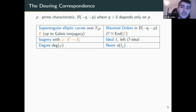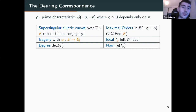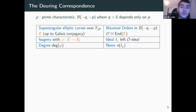This is a two-way street, so the converse is also true: for each maximal order I have a corresponding curve. So this is for the nodes of my graph. Then I can do the same for the edges, which are isogenies and ideals. And in both cases, the degree and the norm of the ideals agree.